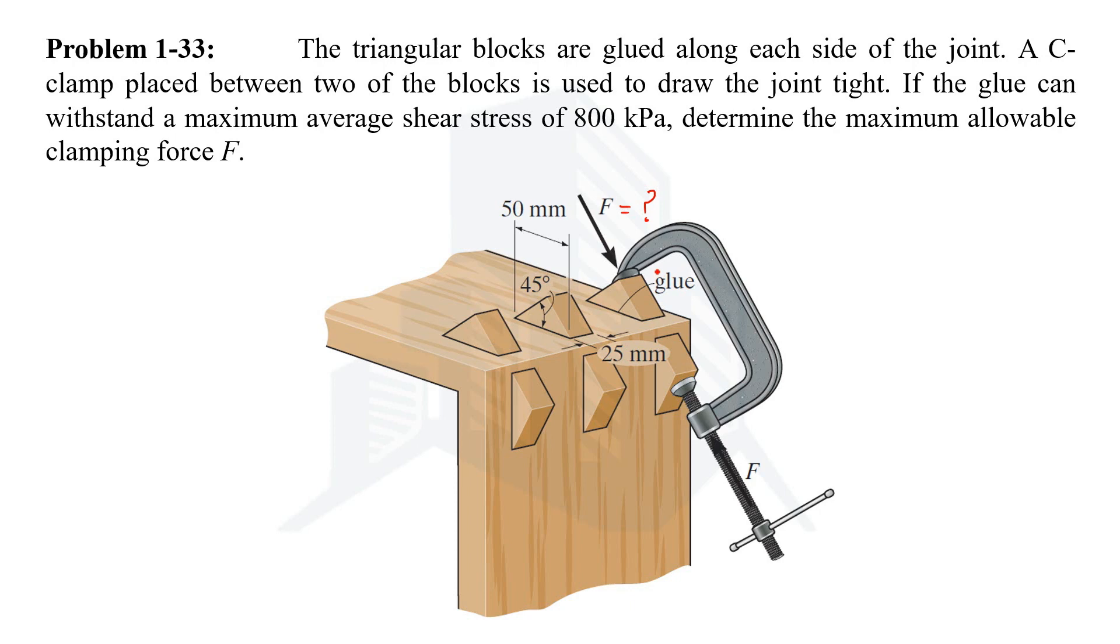Now what is the scenario? In this example these triangular blocks are glued on the wood. So if the glue can withstand the maximum average shear stress of 80 kPa, then we have been asked to calculate the force that is going to act at this amount of stress. Since the type of stress is shear stress, it means we need to know the force which should be parallel to the wood and the triangular blocks.